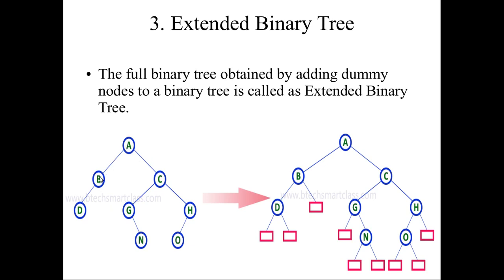A is having 2 children. B does not have 2 children — it has only a left subtree and does not have a right subtree. So we are going to create one dummy variable for B.